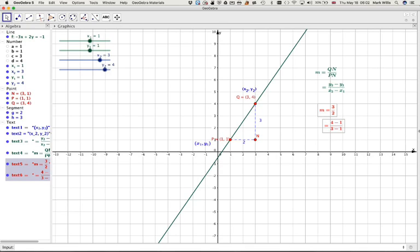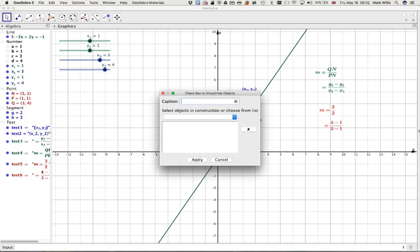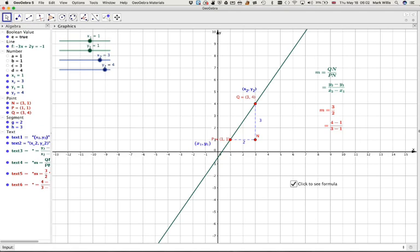Now you want to make those disappear and appear. So you need to go to the check button, this one here. Click on that and then put it somewhere. Put in a title. Click to see formula, put whatever text you want in. And then you select either by that or you look for it down here. Don't put this in more than one tick of a box. Press apply. So if you click on that, that will appear and disappear.